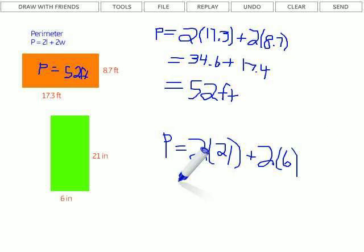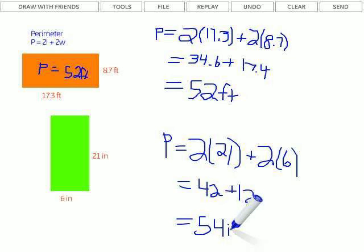Multiply. 2 times 21 is 42. And 2 times 6 is 12. Then 42 plus 12 gives us 54. In this case, we have inches as our units on both of them. So our answer is going to be 54 inches. Go ahead and write that on the top of here. Perimeter equals 54 inches.